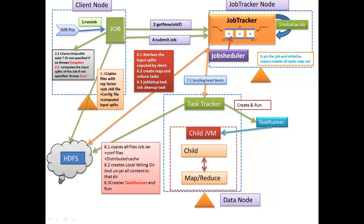While running the mapper task, whatever output the map produces is stored in the local file system of the data node — not in HDFS. After all mappers complete, cleanup tasks are run. The reducer collects all mapper outputs to the local data node, and only after all mappers have completed does the reducer start executing. It then writes the final output to HDFS and terminates.